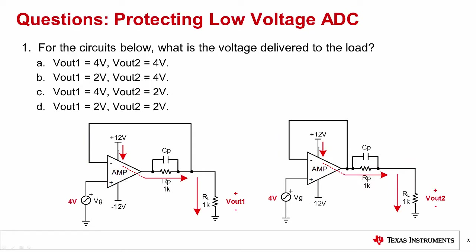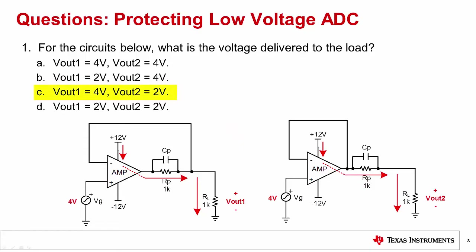Question 1: for the circuits below, what is the voltage delivered to the load? The correct answer is C: Vout1 is equal to 4 volts and Vout2 is equal to 2 volts. For the circuit on the left, RP is inside the feedback loop, so the voltage delivered to the load is 4 volts. Remember that the virtual short between the amplifier's inputs will effectively short 4 volts to the output. For the circuit on the right, the amplifier's output is 4 volts, but it's divided across both resistors, so the load only gets half of the output signal.